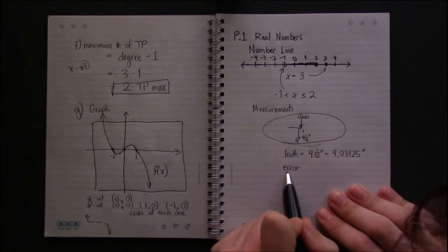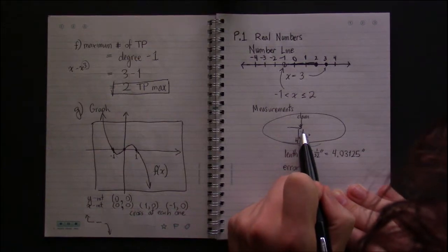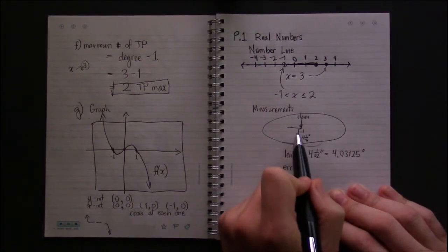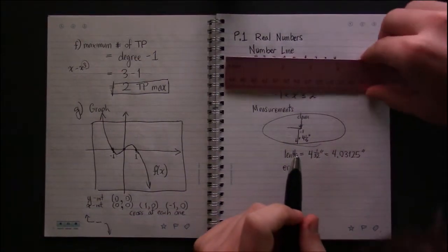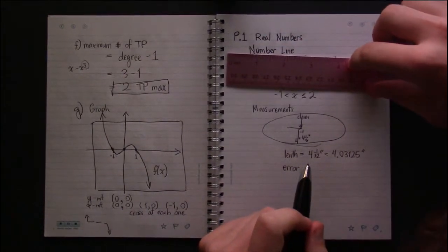But in fact, it looks like the way I've drawn it here, it's a little bit longer. So there's got to be some error. I can't exactly measure that error. The error is determined by the instrument itself, the ruler that I use to measure this with.